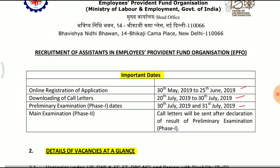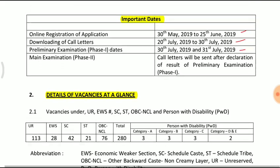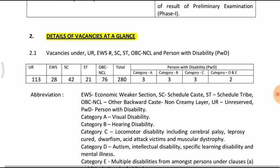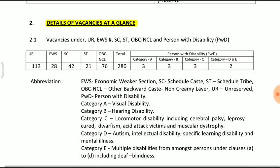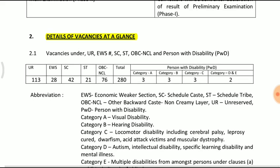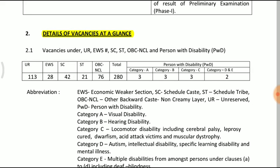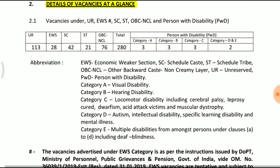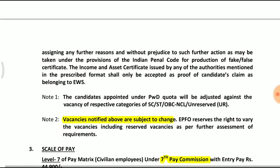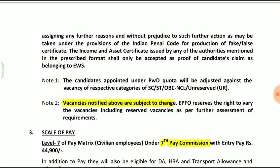There are 2 exams: Phase 1 and Phase 2. Details of vacancies are available. There are 113 vacancies in total. EWS is available, and OBC is available in the general category. You can apply accordingly.